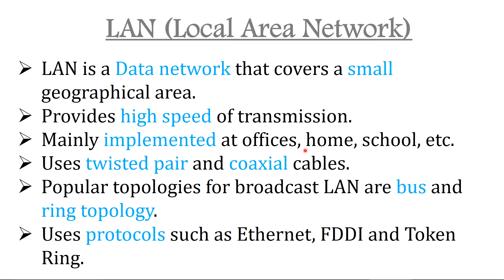LANs are distinguished from other kinds of networks by three characteristics: the size of the network, the transmission technology it uses, and the topology it uses — twisted pair and coaxial cables. The confinement of LAN within a small area eliminates issues like longer propagation delays, which means the worst-case transmission time is bounded and known in advance, and this also helps in simplifying network management.